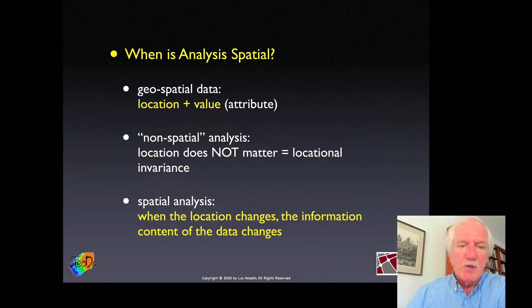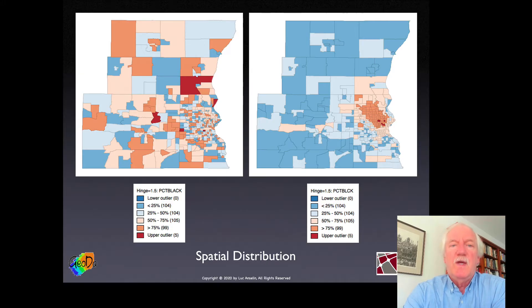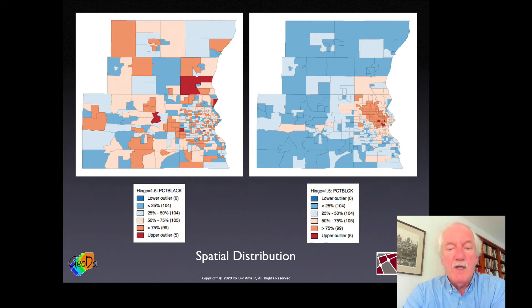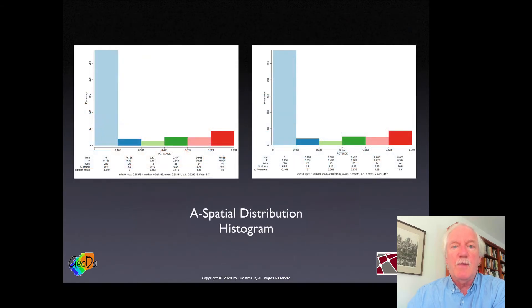Here's some real census data giving the percentage African-American in census tracts in Milwaukee — actually the most segregated city in the U.S. One of these maps is fake and one is real. One shows the actual spatial distribution of African-Americans; the other is a random map with the same numbers randomly reshuffled. These two maps are obviously different, which is what we are concerned with in spatial analysis. However, if you just make histograms, they're the same.